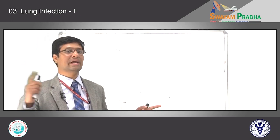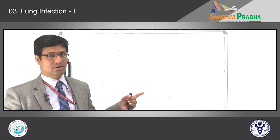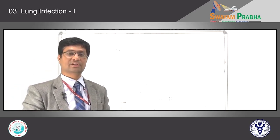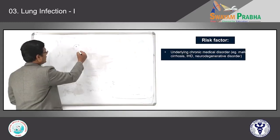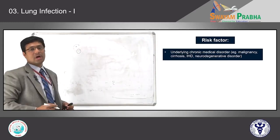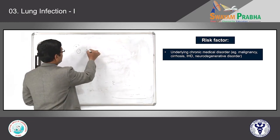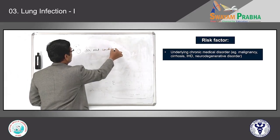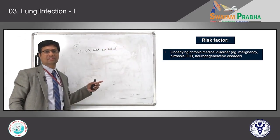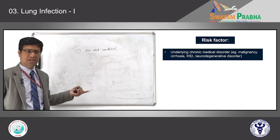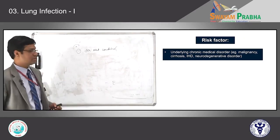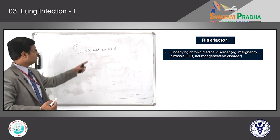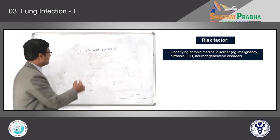Early age and very old age are the most common age groups affected with lung infection. What are the risk factors in middle-aged individuals? Any patient having a chronic medical condition — such as malignancies, chronic liver disease, chronic heart disease, or any neurodegenerative disorder — will somewhere affect the normal defense mechanisms, making these patients more prone to develop lung infections.